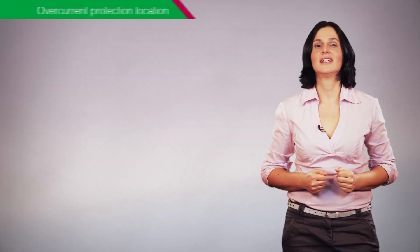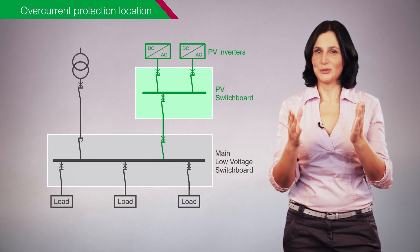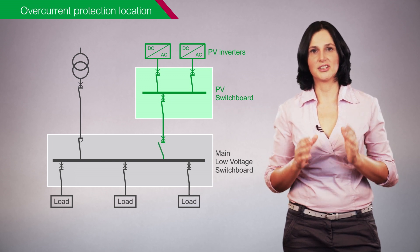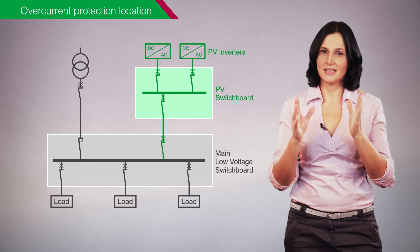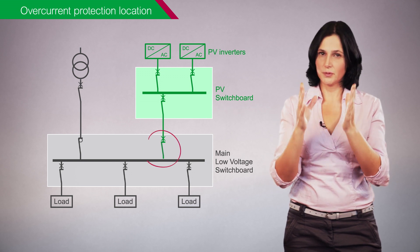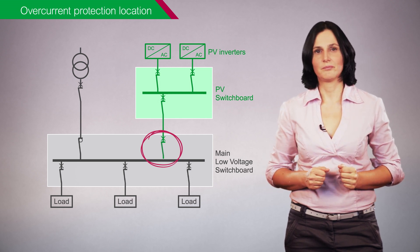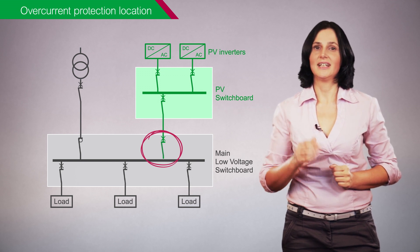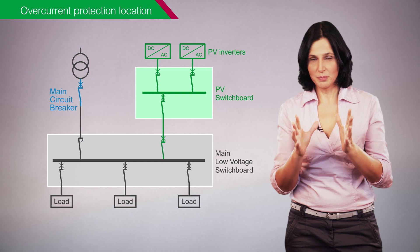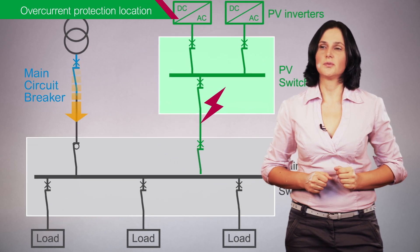Another safety measure is AC overcurrent protection for the photovoltaic power supply system. To isolate electrical faults on the photovoltaic installation, an overcurrent protection device must be located at the point where the photovoltaic system is connected to the building's electrical installation. It's essential to include the overcurrent protection in this exact location to avoid tripping of the main circuit breaker in case of fault in the photovoltaic feeder.